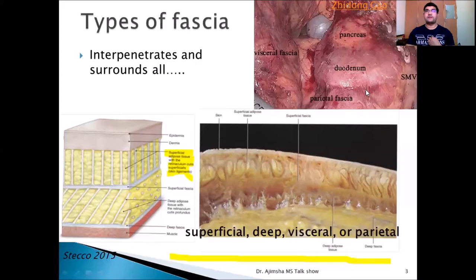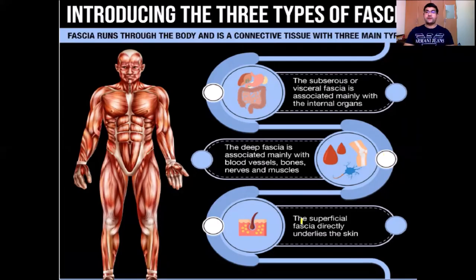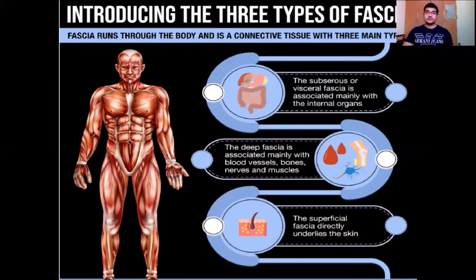The superficial fascia is directly associated with the skin. Deep fascia is associated mainly with blood vessels, bones, nerves, and muscles — wherever inside the body, deep fascia is the main one. The visceral or subserosal fascia is associated mainly with the internal organs. This is the classification of the fascial system.